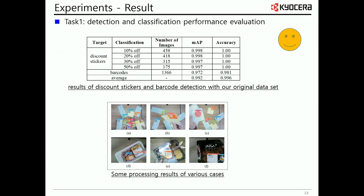Table 1 shows the detection and classification results of discount stickers and buckles. We achieve good performance on both. The average MAP for the detection task is over 0.97 and the classification accuracy is over 0.98. There are some failure cases that occur on products with serious distortion, reflection, or multiple overlapping challenges.